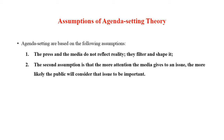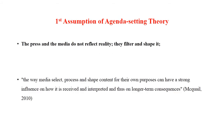The first assumption states that the press and media do not reflect reality — they filter and shape it. This was highlighted when McCombs and Shaw researched voting behavior in Chapel Hill and found that media had affected it. Communication scholar McQuail also noted this, stating that media selects, processes, and shapes content.